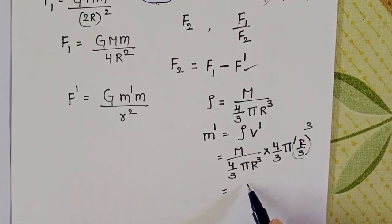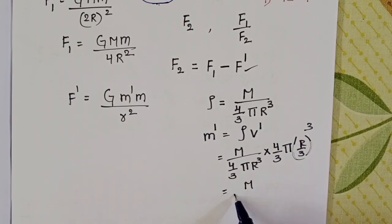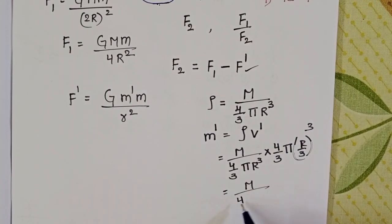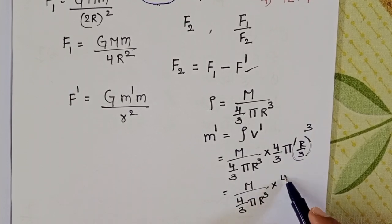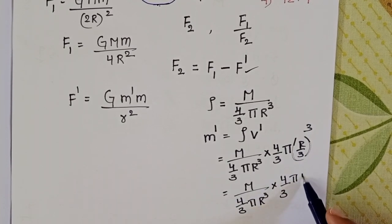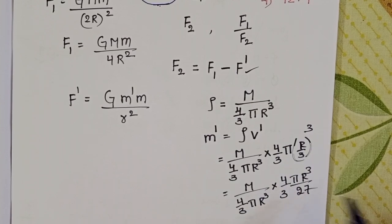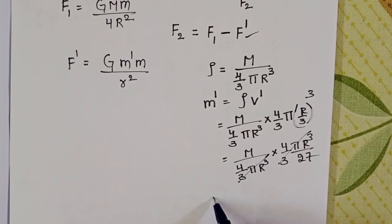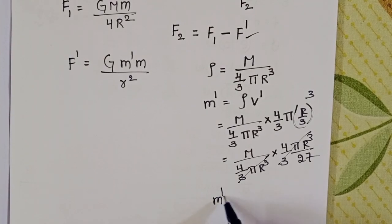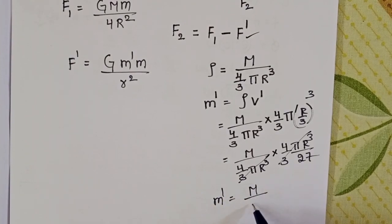This gives M / [(4/3)πR³] × (4/3)πR³/27. The (4/3)πR³ terms cancel, so the mass of the small sphere M' equals M/27.